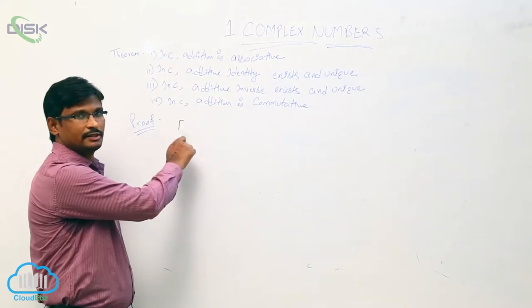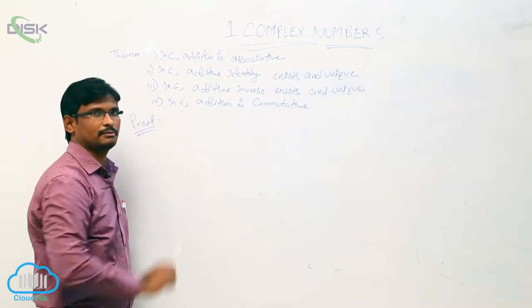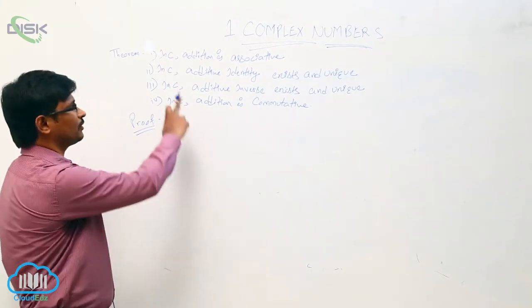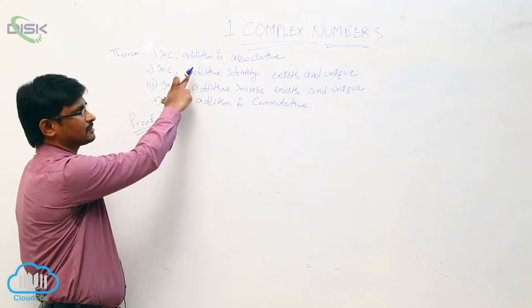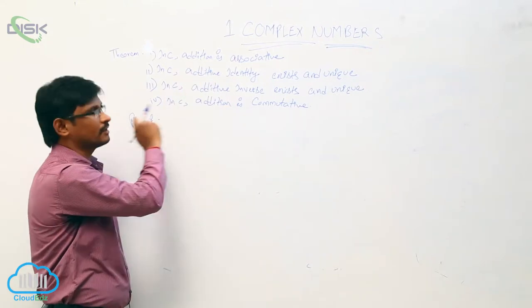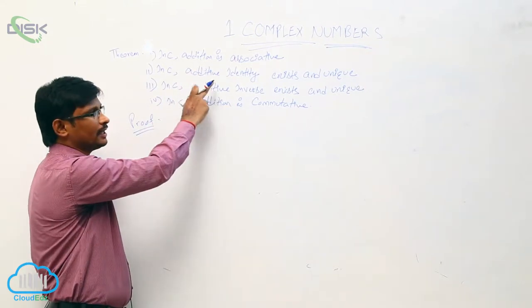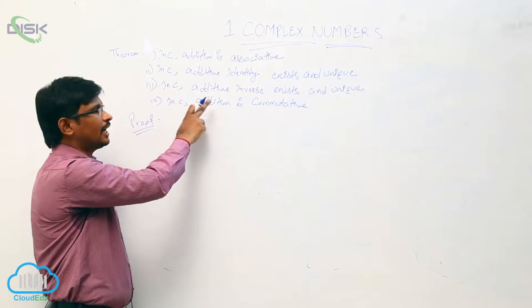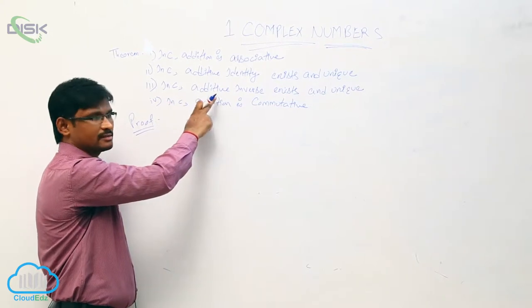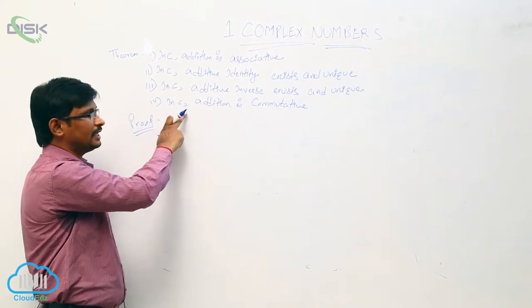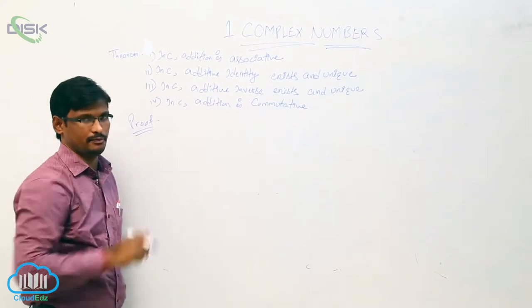We will see the addition theorem for complex numbers. In complex numbers, addition is associative. Additive identity exists and is unique. Additive inverse exists and is unique. And one more — addition is commutative.